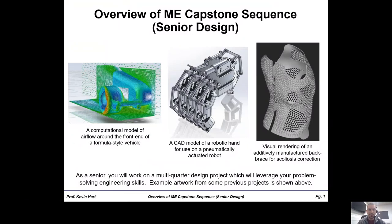Here on my screen you should see a title slide: the overview of the mechanical engineering capstone sequence. I've highlighted some work done this past year on a variety of projects to give you a feel of what you might be working on. On the far left we see fluid flow around a formula vehicle. In the middle there's a pneumatically actuated robotic arm, and also a 3D rendering of an additively manufactured brace for scoliosis correction.